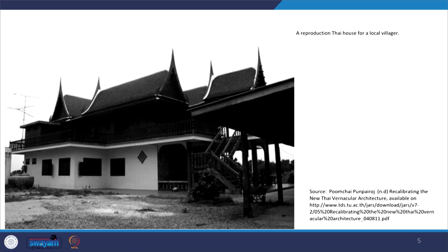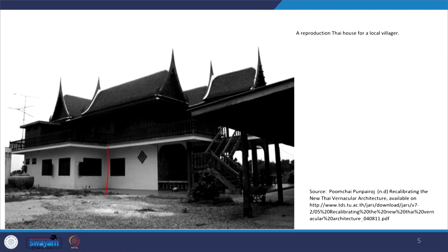Today whatever we are seeing here is almost like any other modern house you see in any part of Asian countries — the stilts have completely disappeared and now it is mostly a regular house with a conical structure. This is how the reproduction of this Thai house was done by local villagers.